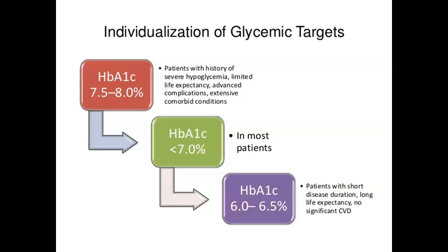To provide appropriate glycemic targets, we have to assess the patient holistically. Most patients need a glycemic target of HbA1c between 6.5 to 7. Younger patients recently diagnosed with relatively shorter disease duration and longer life expectancy with hardly any diabetes-related complications need more stringent control, with HbA1c targets between 6 to 6.5. For elderly patients diagnosed with type 2 diabetes long ago, with limited life expectancy and multiple comorbidities, targets need to be relaxed in order to provide good quality of life.